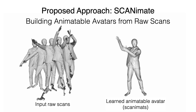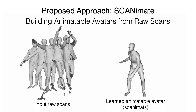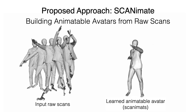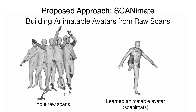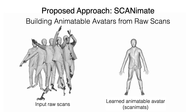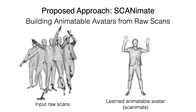To address this, we propose Scanimate, a method to learn a parametric avatar from raw scans. Scanimate eliminates the need for a tedious surface registration process. Moreover, there is no garment-specific template or simulation parameters required to achieve realistic deformations.